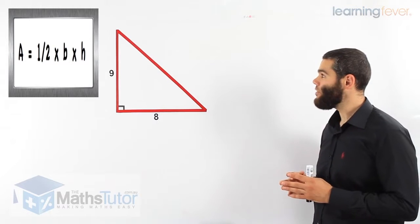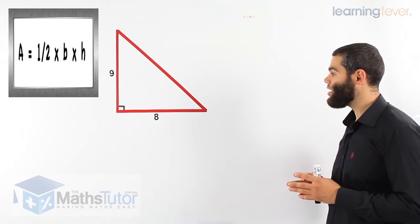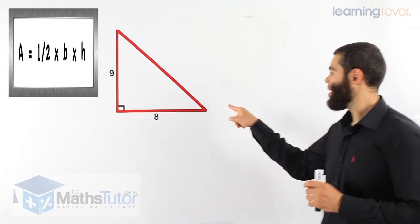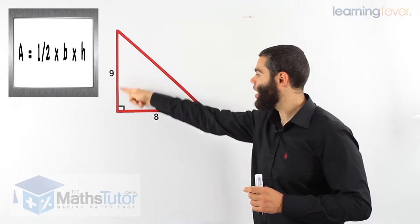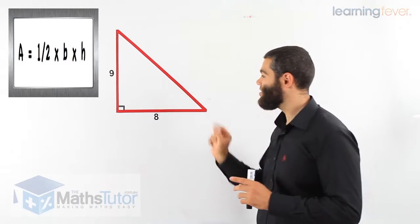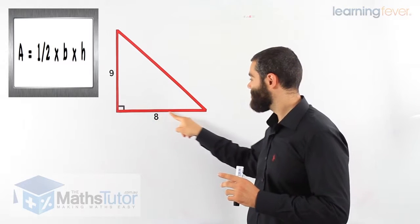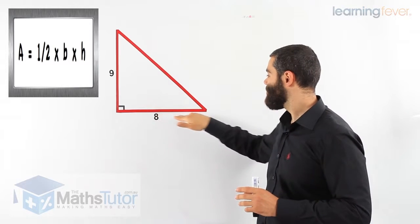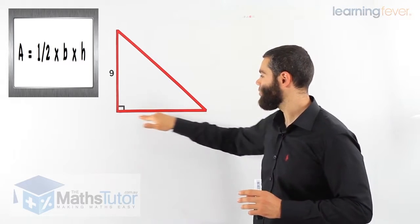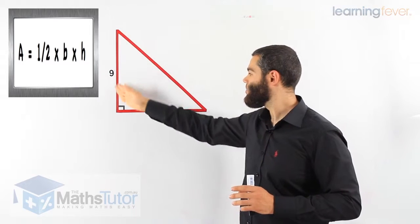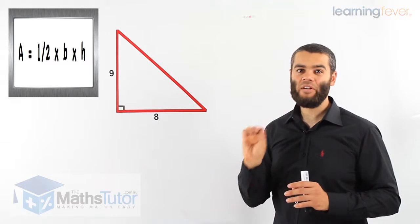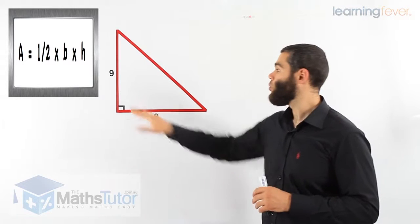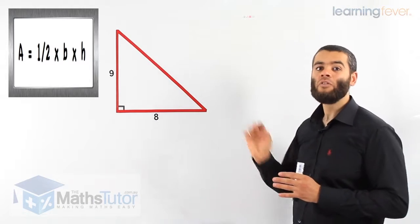This example here: we have a triangle marked with a base of 8 and a height of 9. Notice we have a slant height and we have our vertical height. The vertical height is the one that meets the base at a right angle — at 90 degrees. It's perpendicular, meaning it meets the base at a right angle. Very important rule to note. Now we can locate the base and we can locate the height.